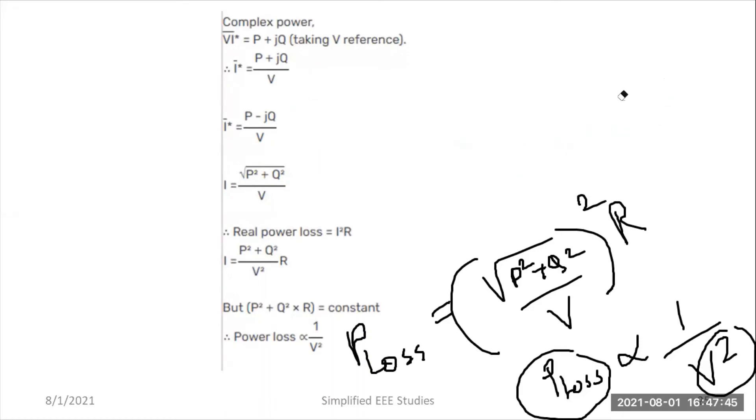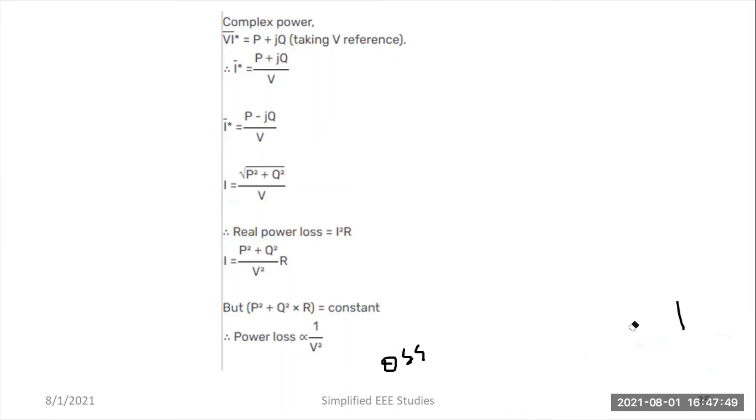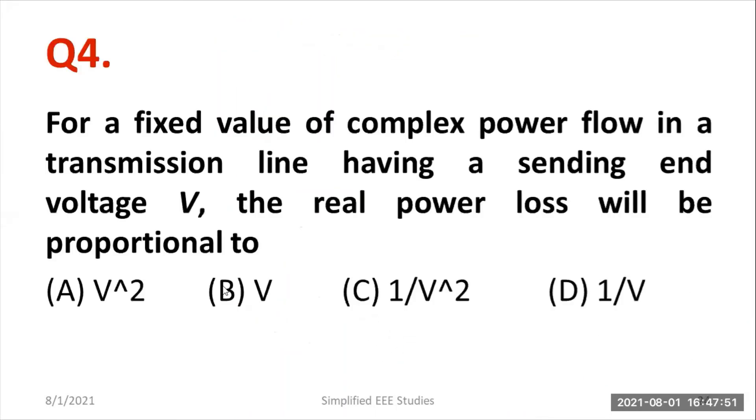So please go through the relation in the particular question. Let me turn back that particular question and I'll be showing you. So that means here the power loss is proportional to one divided by V². Or you can call power loss is inversely proportional to V². So as per the question, the power loss will be proportional to 1 by V². Obviously, I have to go for option C. I think it is clear to you.